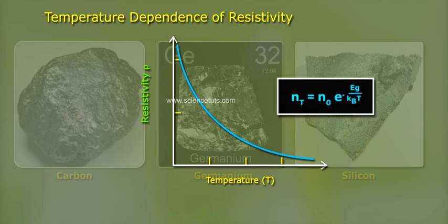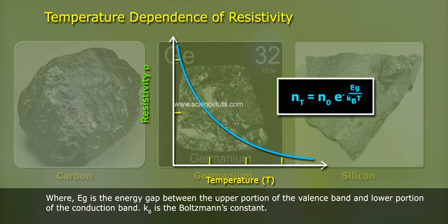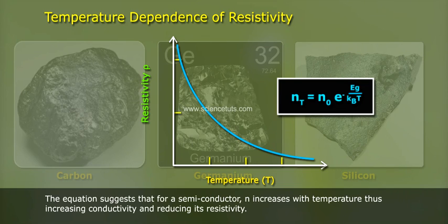n(T) = n₀e^(-Eg/kbT), where Eg is the energy gap between the upper portion of the valence band and lower portion of the conduction band, kb is the Boltzmann's constant. The equation suggests that for a semiconductor, n increases with temperature, thus increasing conductivity and reducing its resistivity.